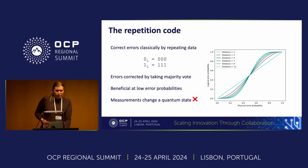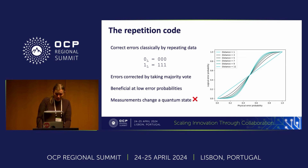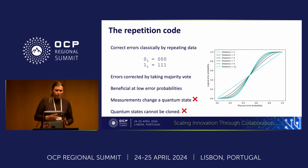There are two problems with applying this to quantum computing. First, this requires us to look at our physical bits and take a majority vote — but looking at a quantum bit changes the state. And secondly, even if we could look at our qubits and take a majority vote, quantum states cannot be cloned, so we can't pick the most common state and repeat it.